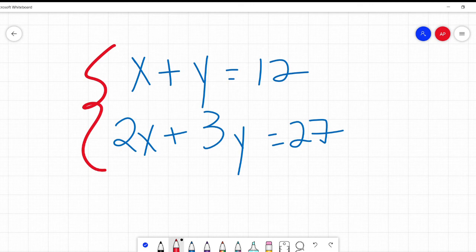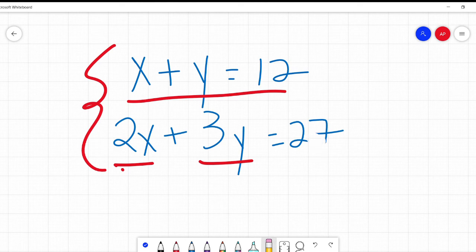And he says, I am thinking of two numbers. If I add them together, they equal 12. If I multiply the first number by two and the second number by three, it equals 27. What are my two numbers?